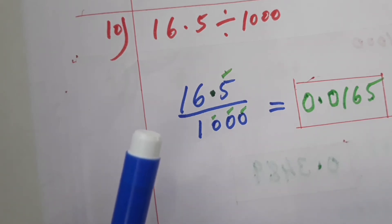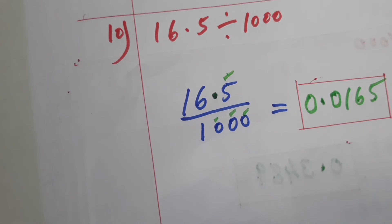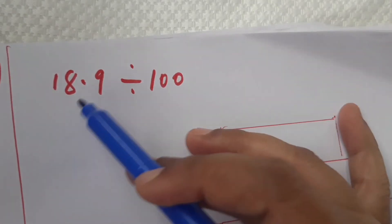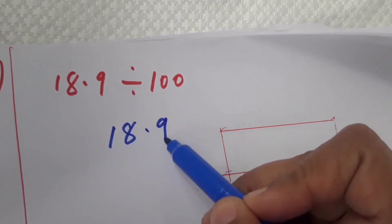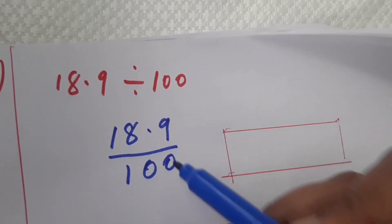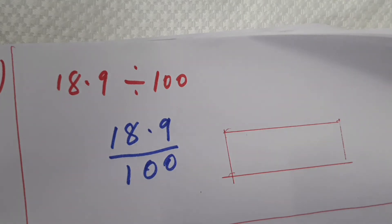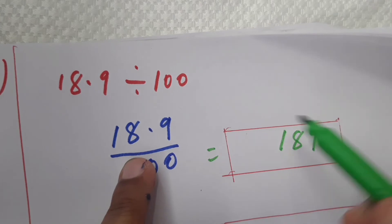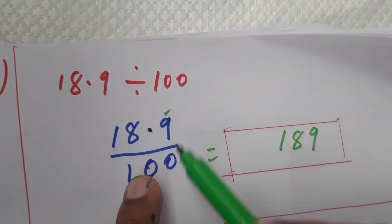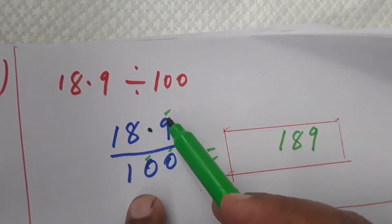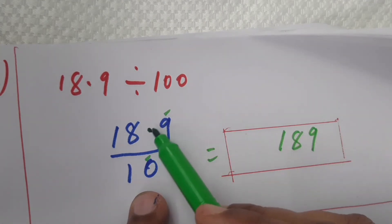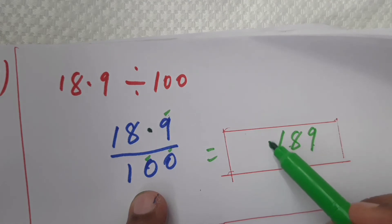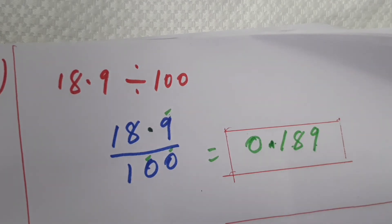Now the eleventh question: 18.9 divided by 100. Write it as 18.9 by 100. Write the number as 189 without the decimal point. After the decimal point there is one digit, and two zeros — total three digits. After three digits from the right place the decimal point. The answer is 0.189.